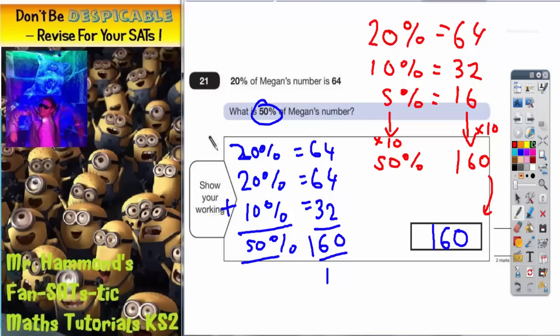Those of you are interested in what her original number would be, well if 50% was 160, the original number would have been 100%, so you've doubled that. So you've doubled your 160, would have been 320. So Megan's number would actually have been 320.